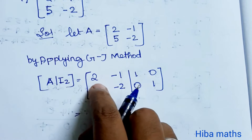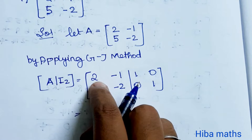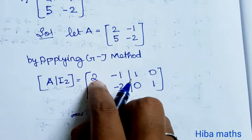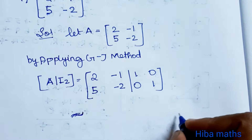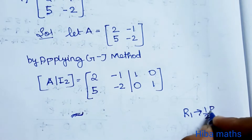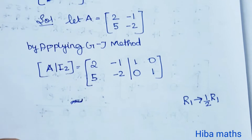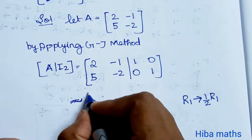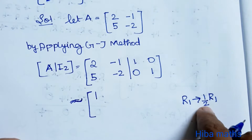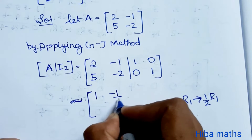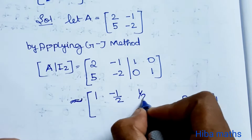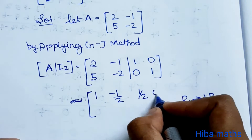First, the leading entry is 2, so we want to make it 1. We apply R1 → (1/2)R1. So the first row becomes: 2÷2 = 1, -1×(1/2) = -1/2, 1×(1/2) = 1/2, and 0×(1/2) = 0.